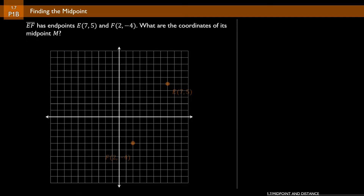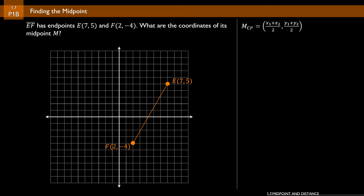This helps us solve problem 1b. Segment EF has endpoints E(7, 5) and F(2, -4). What are the coordinates of its midpoint M? We don't need the coordinate plane drawing — we have enough information from the question. Choose the correct formula: midpoint equals x1 plus x2 over 2, comma y1 plus y2 over 2. Plugging in: 7 plus 2 over 2, and 5 plus negative 4 over 2, giving us the ordered pair 9/2, 1/2 — or 4 and a half, one half — as the midpoint.